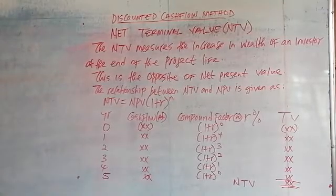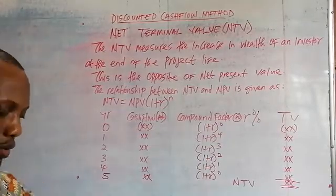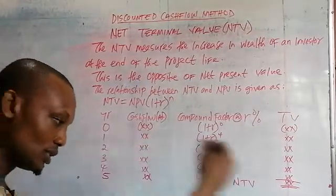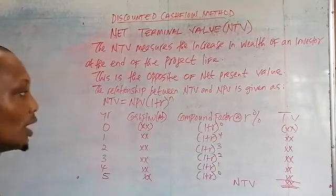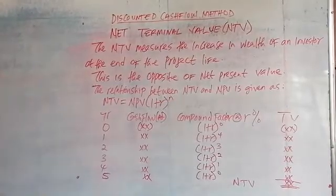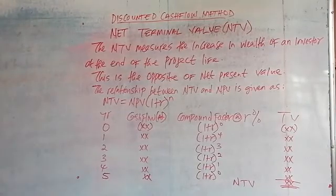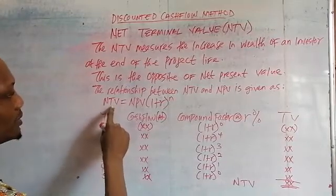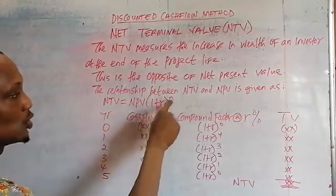So what is that relationship? Under NPV we tend to bring the future to the present state. But under net terminal value we are taking the present to the end — taking the cash flow to the end of the project life. The relationship that exists between them is: net terminal value is equal to NPV multiplied by (1 + r) raised to the power n.